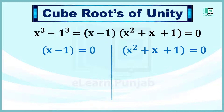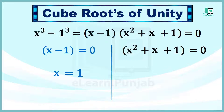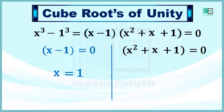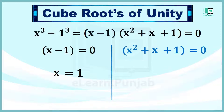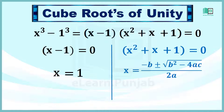सबसे पहले x minus 1 is equal to 0 को देखते हैं। यहाँ पर x की value आसानी से आ जाती है जो कि 1 है — यह x minus 1 is equal to 0 में minus 1 को right side पर shift करने से हासिल होती है। दूसरी चानिब हमारे पास x square plus x plus 1 है, जिसको हम quadratic formula की मदद से हल करते हैं।